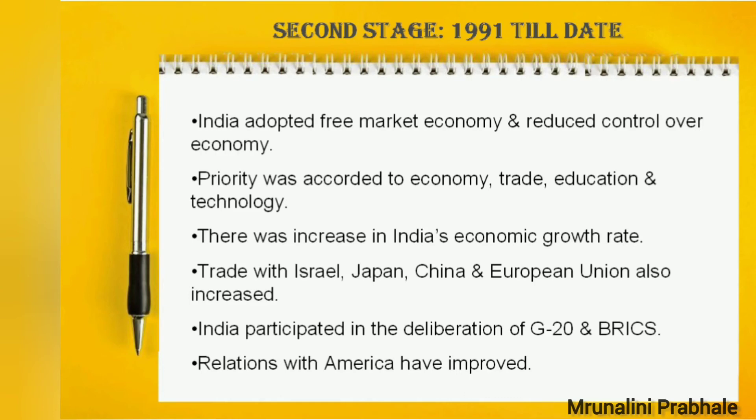India began to participate in organizations at the international and regional levels more than before — for example, G20 and BRICS, i.e. Brazil, Russia, India, China and South Africa. Our relations with America strengthened, mutual trust grew, and India's status rose in the international community.